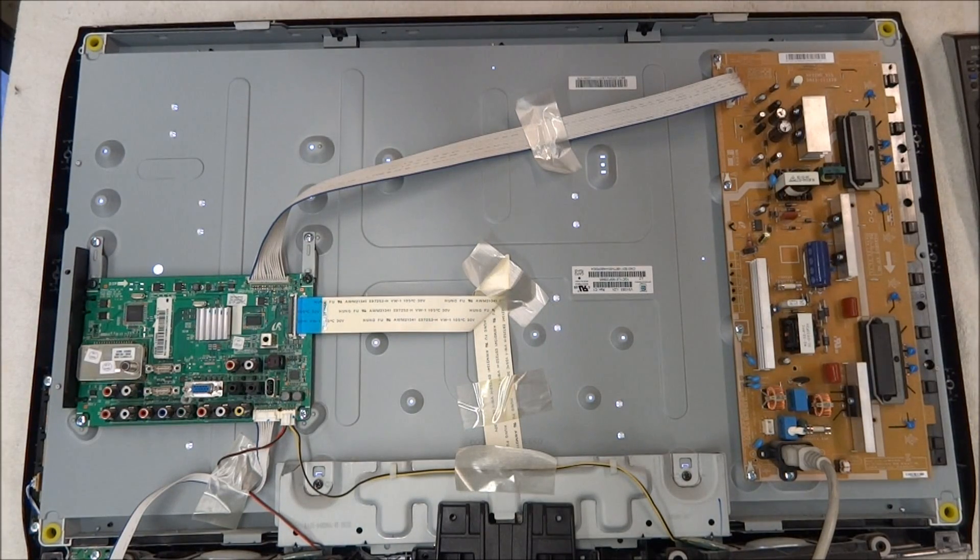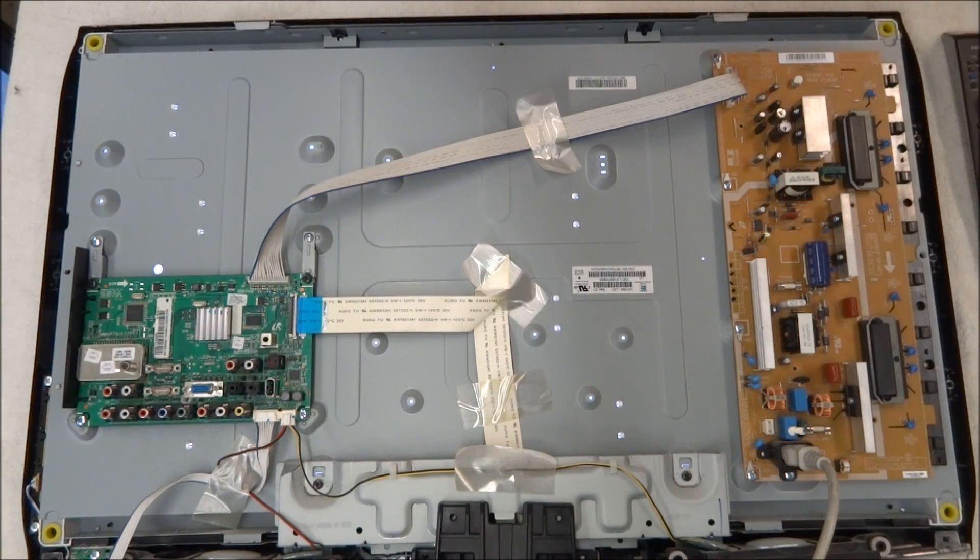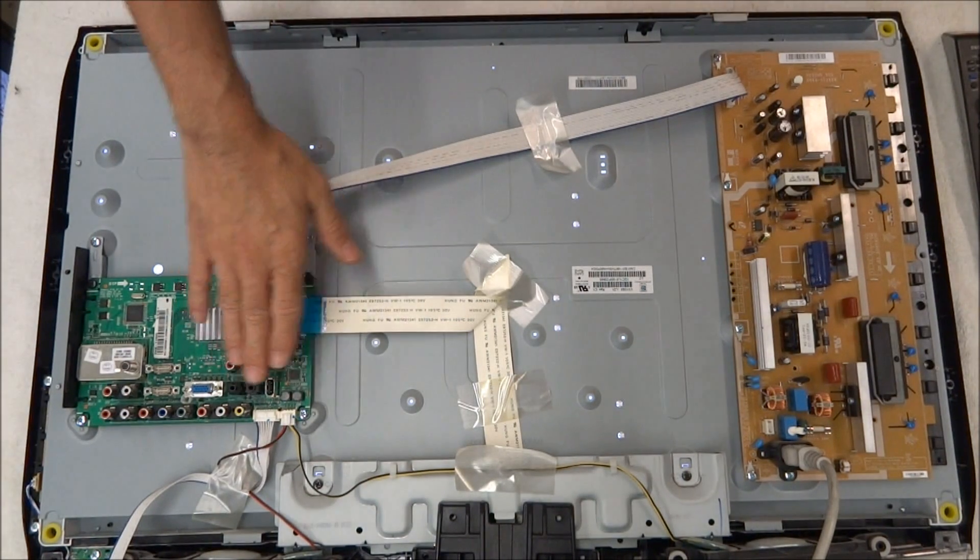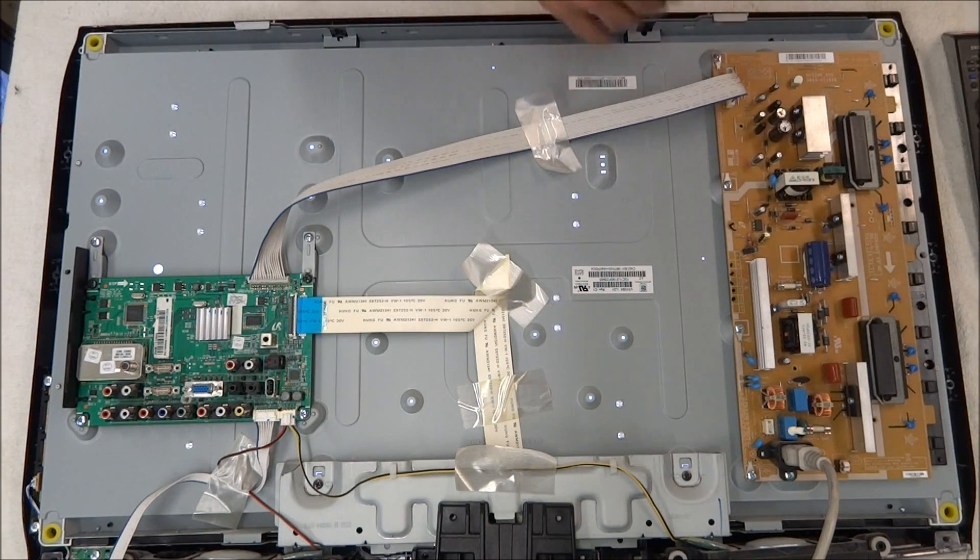I thought I would just show you some voltages if you have one of these sets and you just want to troubleshoot it. I was going to show you what the standby voltages should be, where it gets the on-off command, where it turns the inverter on and off. As you can see, this one only has the two boards. It has a main board, and it has a power supply inverter board.